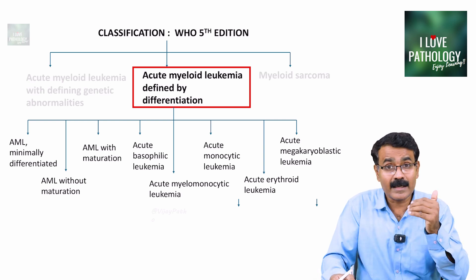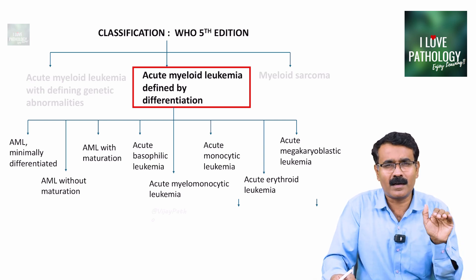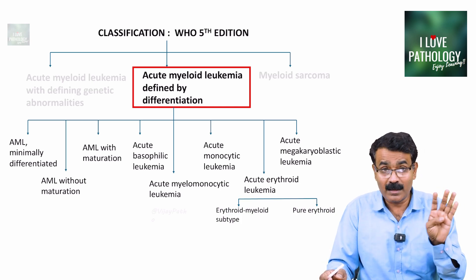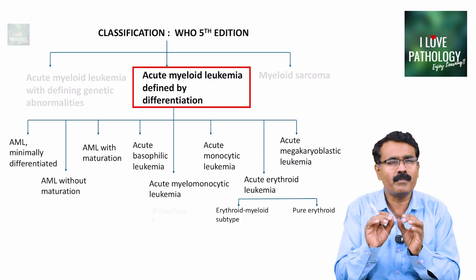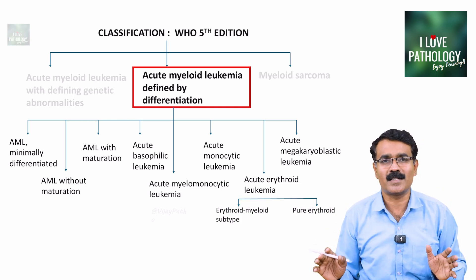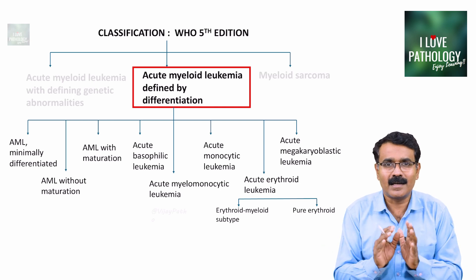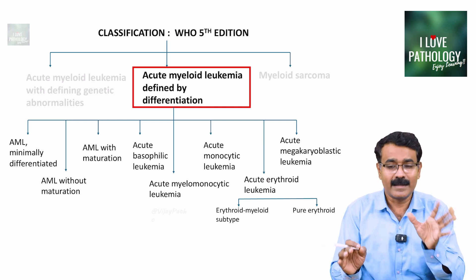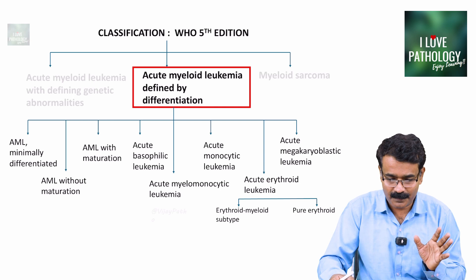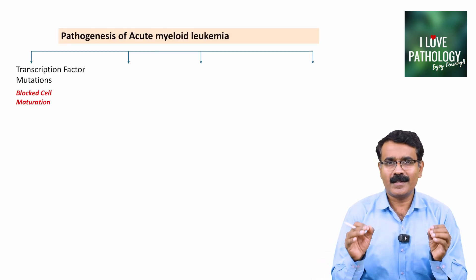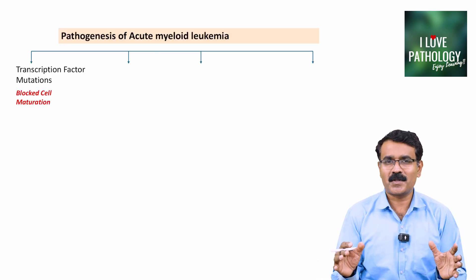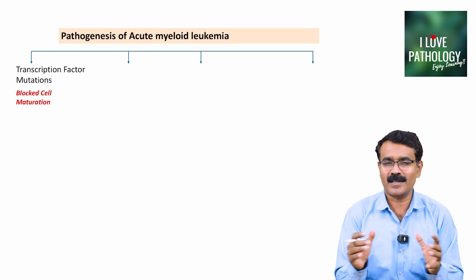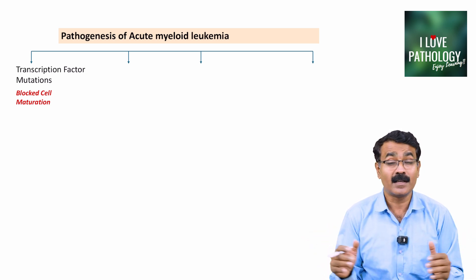Further, acute erythroid leukemia is subcategorized into erythroid-myeloid subtype or pure erythroid subtype. These are the types of leukemias defined by differentiation. Having understood the classification of acute myeloid leukemia, WHO 5th edition has simplified the classification. Let us now understand the pathogenesis of acute myeloid leukemia.